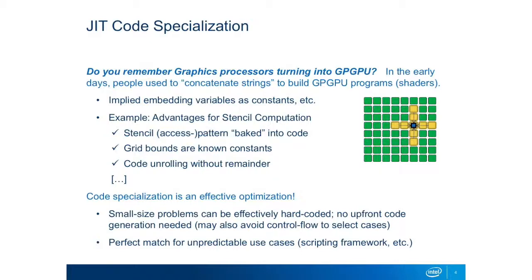With machine learning, there is a great move, at least on the CPU side, towards just-in-time code generation because it is certainly a specialized problem. You end up with, say, small convolutions and things that require specialized code because you run them over and over again. You can utilize some hard-coded things, and one example here is not a convolution or anything from machine learning, but rather from image processing.